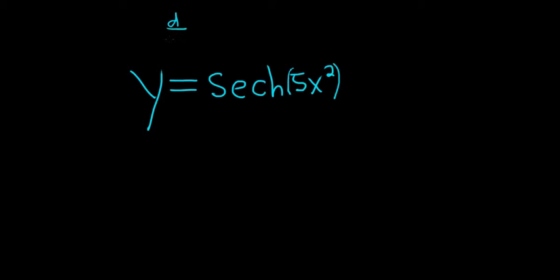Recall that the derivative of the hyperbolic secant of x—well, if it was just secant, it would be secant tangent. But whenever it's hyperbolic, you do get a negative sign here. So it's negative hyperbolic secant, hyperbolic tangent.